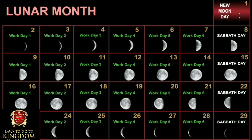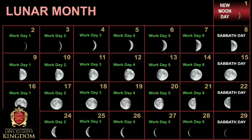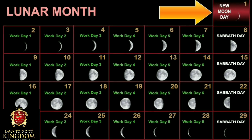Seven days from the New Moon, the moon will be 50% full — half moon. Seven days after that, 100% full — full moon. Seven days after that, 50% full again — last quarter. Seven days after that, the moon will look very tiny — the last crescent. The day after that is automatically the next New Moon Day.